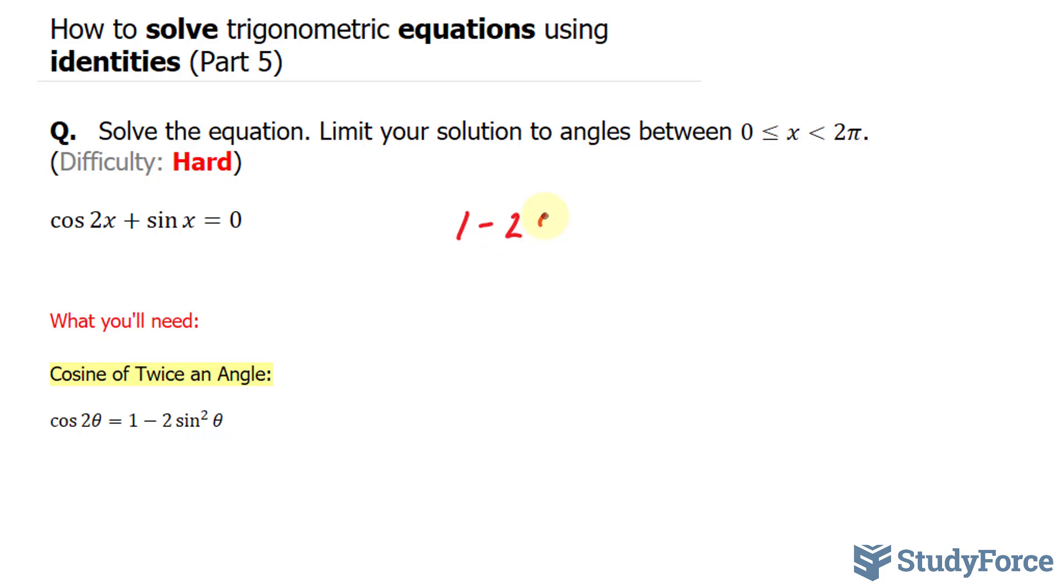We have one minus two sine squared x plus sine x is equal to zero.